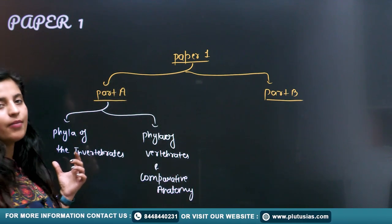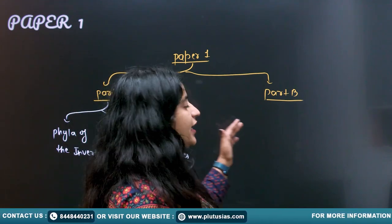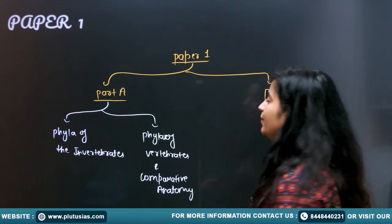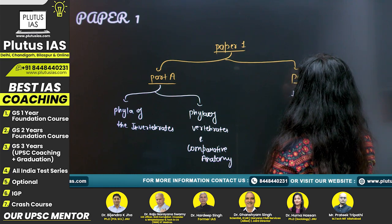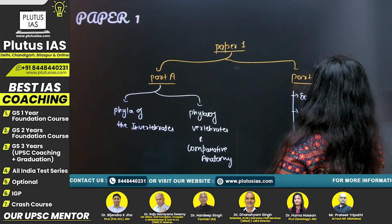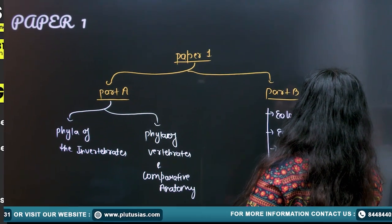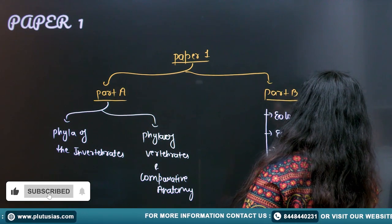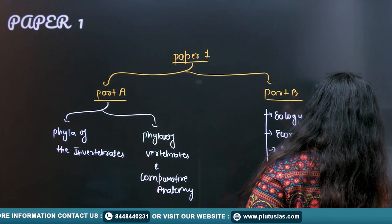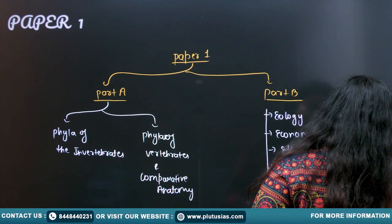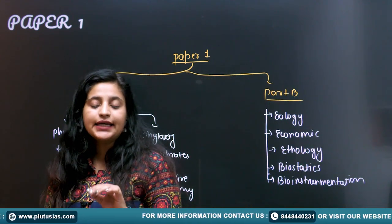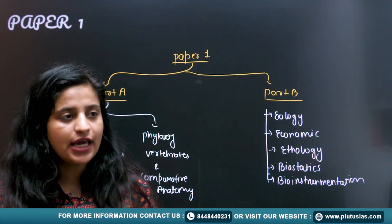If I talk about part B, what topics are included in your part B? In part B, we have ecology, we have economic geology, next we have ethology, next we have biostatistics, and lastly you have bio-instrumentation. Also see one point - the economic geology part, it is overlapping to your GS. Because see, when you learned about the GS...